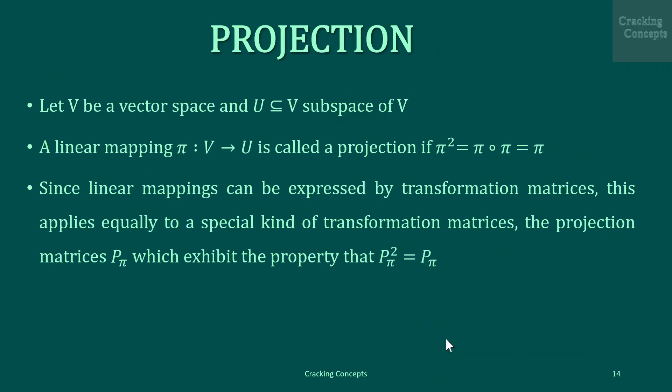Now let us define what a projection actually is. Let V be a vector space and U a subset of V. A linear mapping pi from V to U is called a projection if pi squared can be written as pi composed with pi, equal to pi. Since linear mappings can be expressed by transformation matrices, this applies equally to a special kind of transformation matrices called projection matrices P_pi, which exhibit the property that P_pi squared equals P_pi.